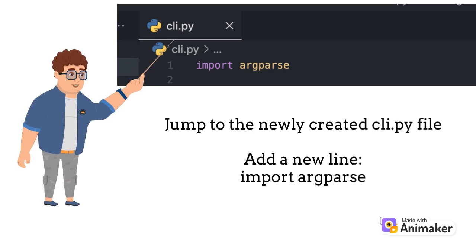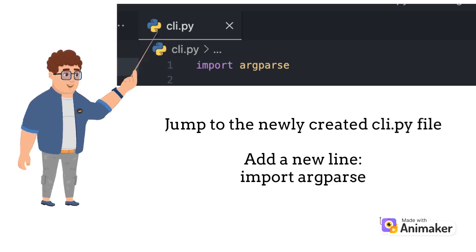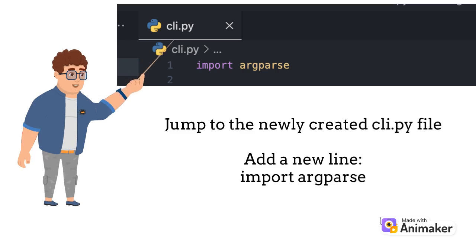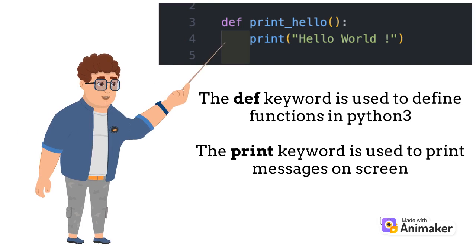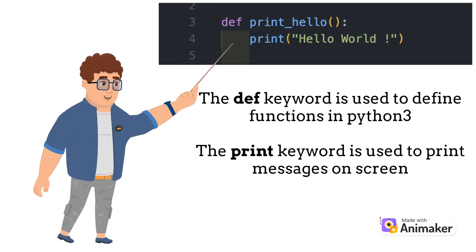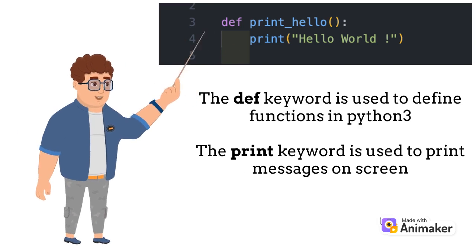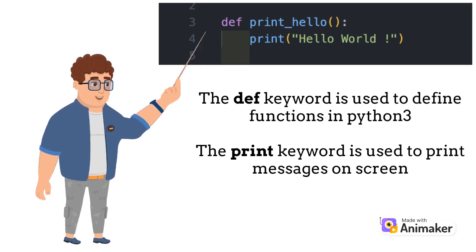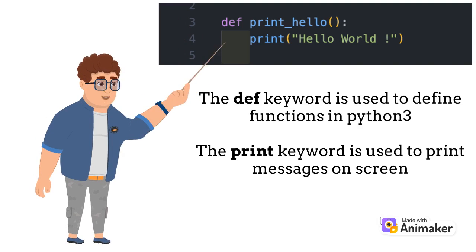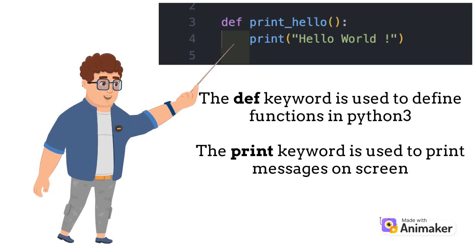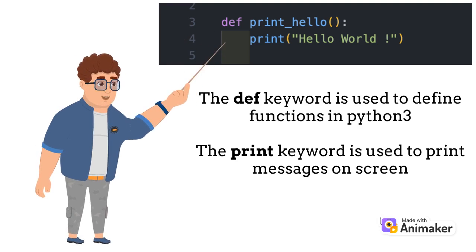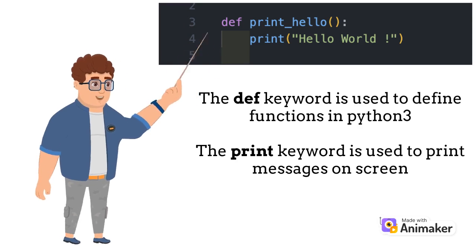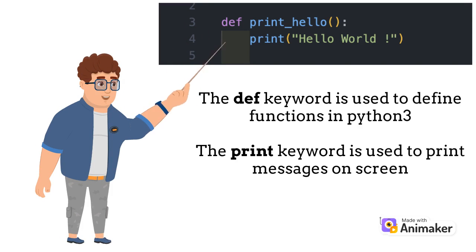Jump to the Editor section in Visual Studio Code and add a new line. Import argparse. Create a new function by adding def print_hello. The def keyword is used to define new functions. Then add a new line and type print hello world. The print keyword is used to print messages on screen.